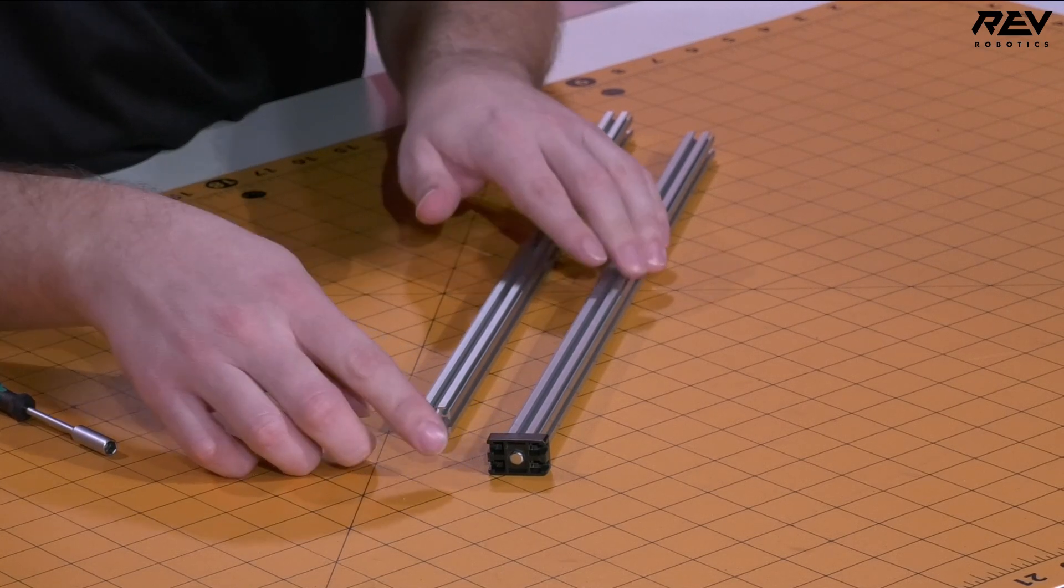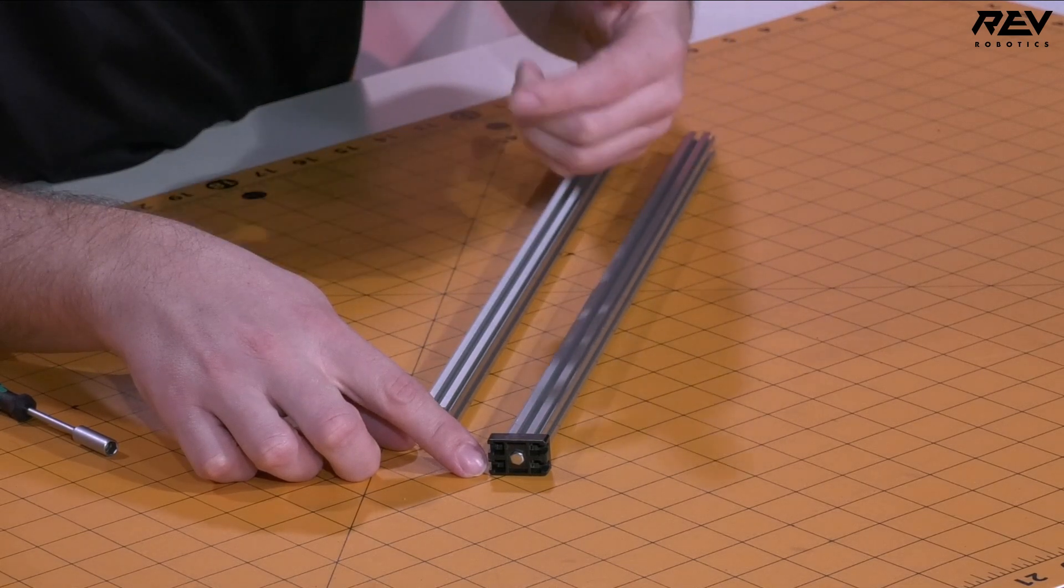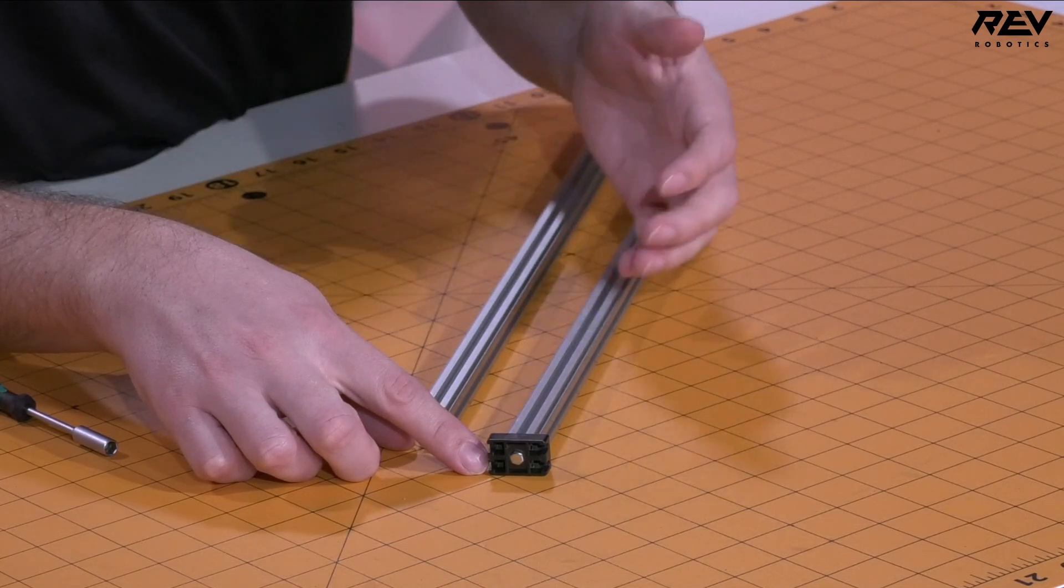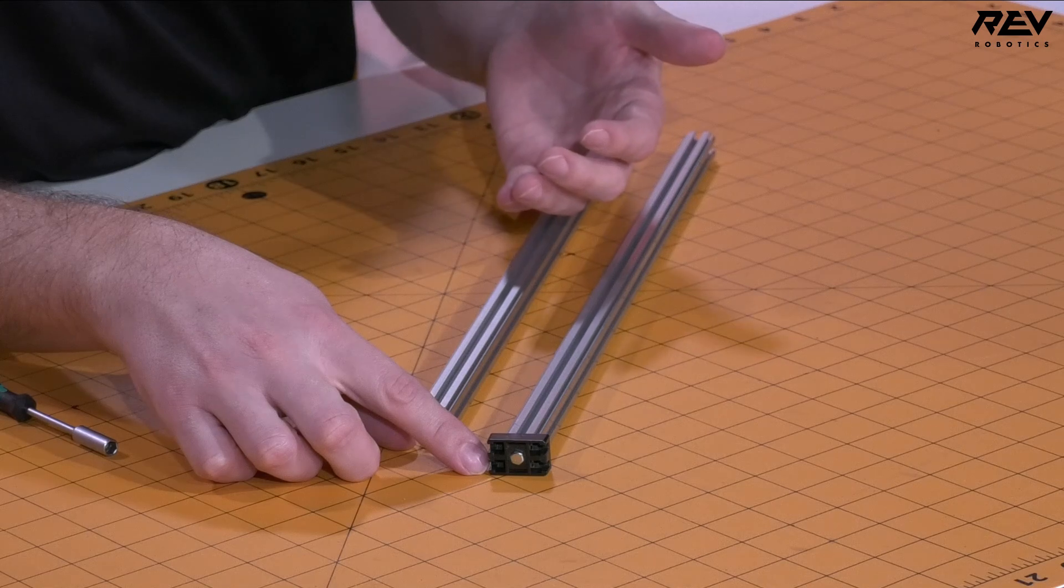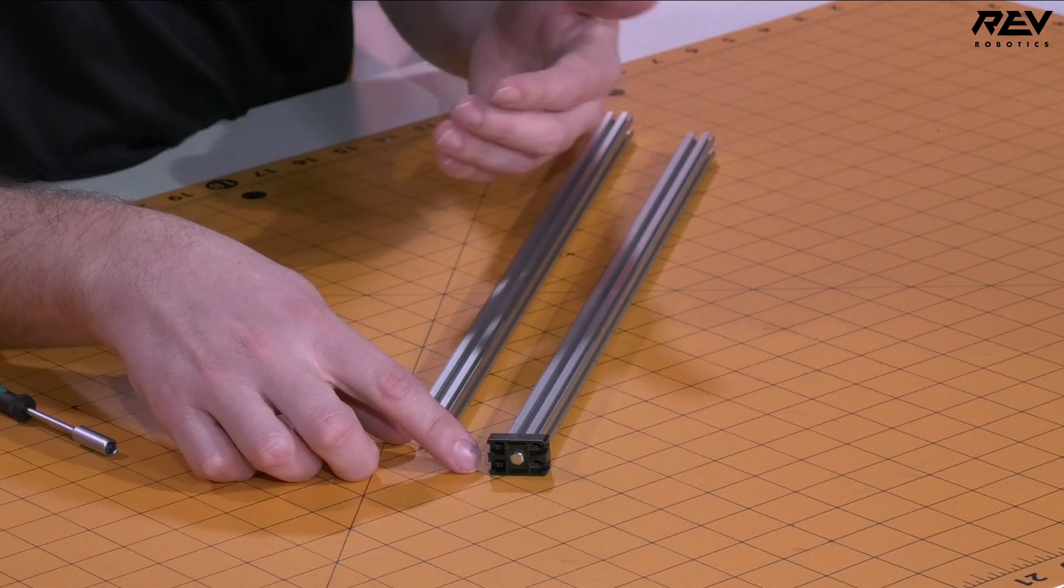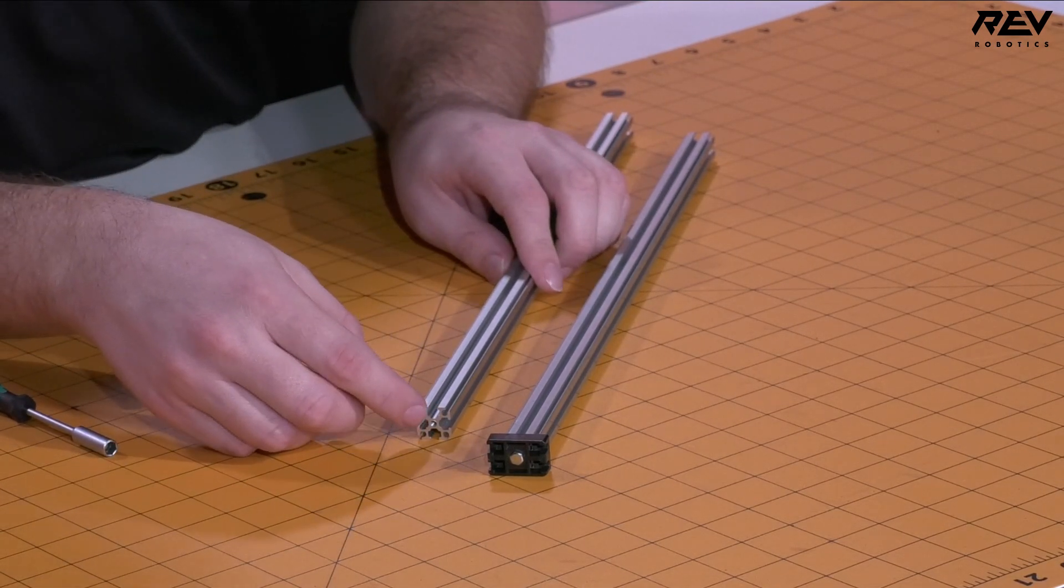The end caps are great because they allow you to support the pulley that's going to have the whole string apparatus for your linear motion system. But one of the things that you need to do beforehand is you need to tap the end of the extrusion while you're putting these on.